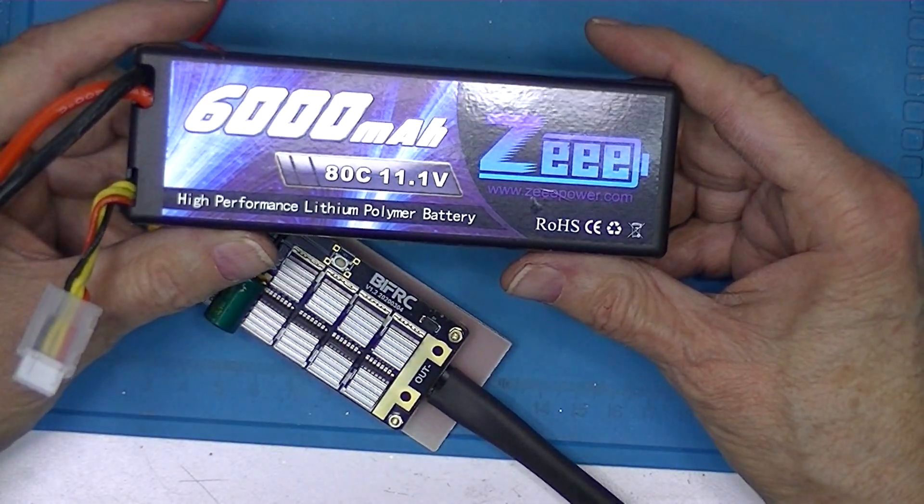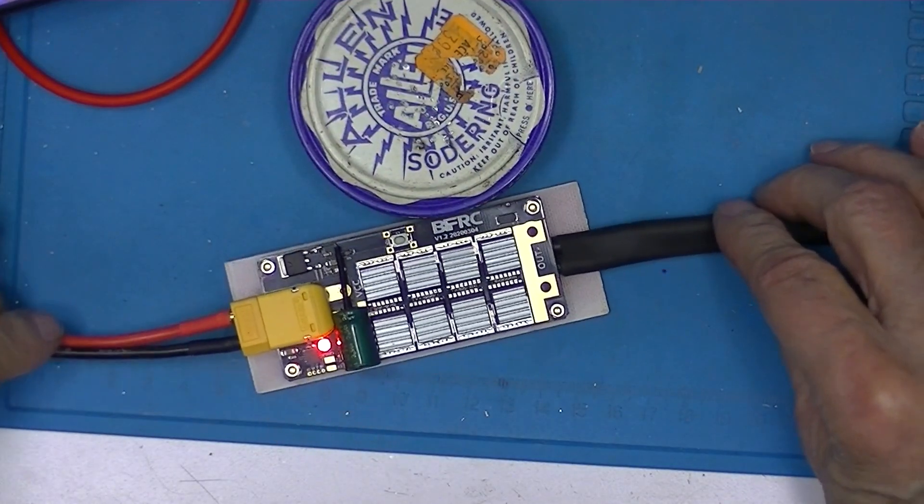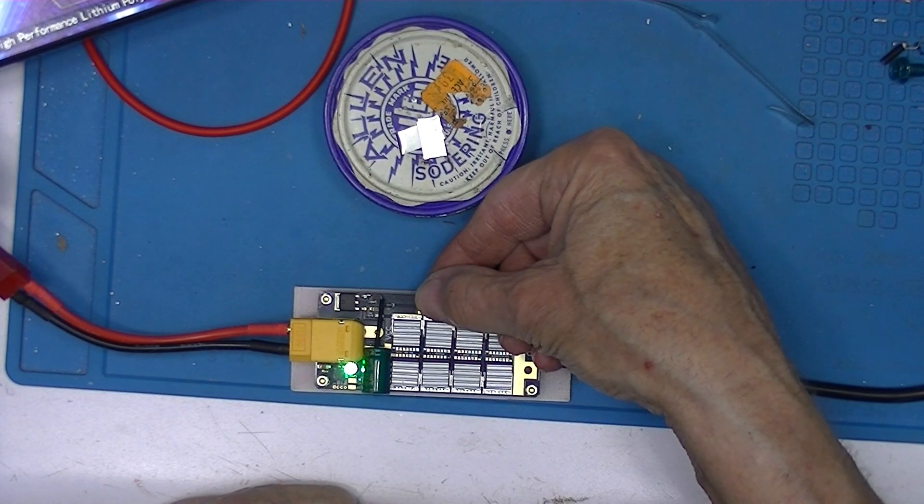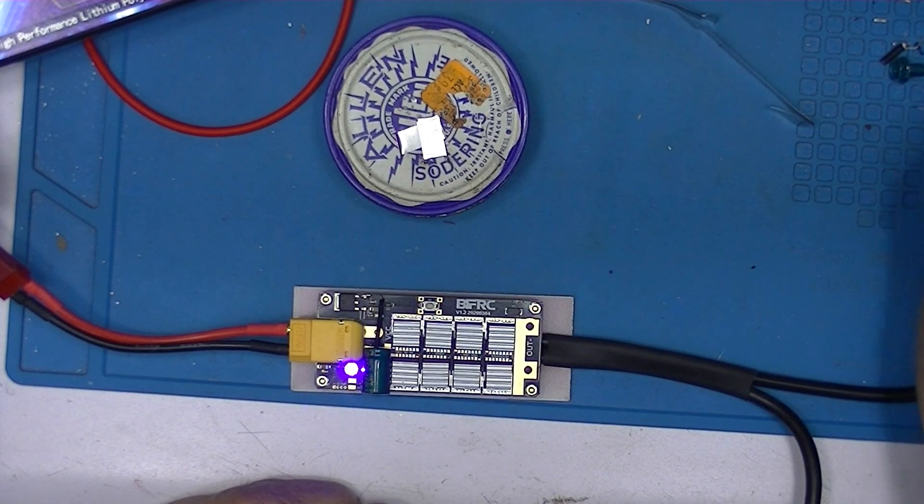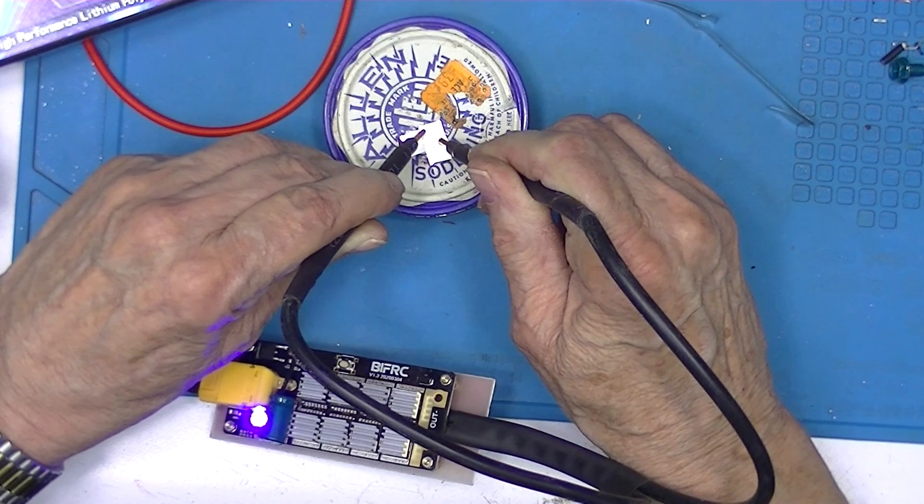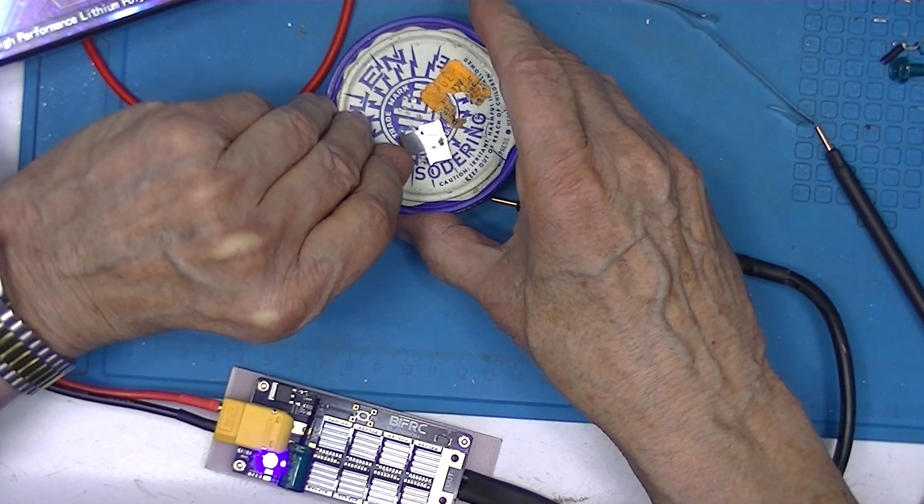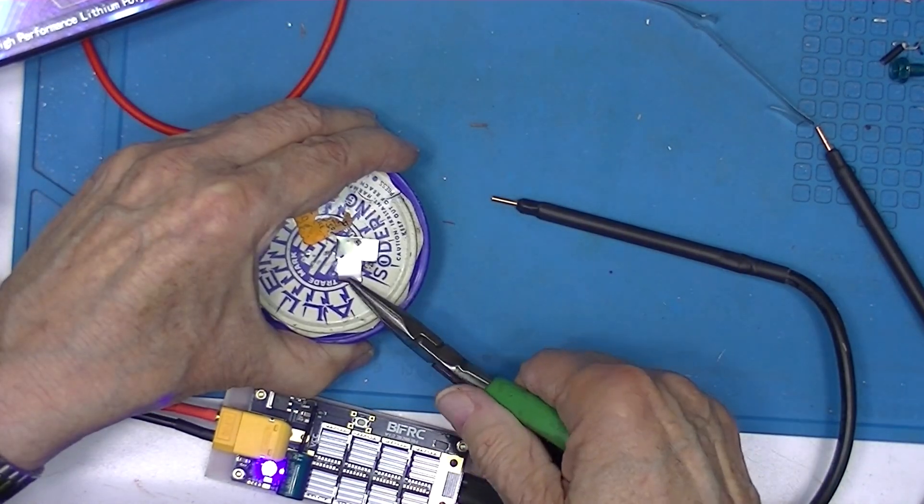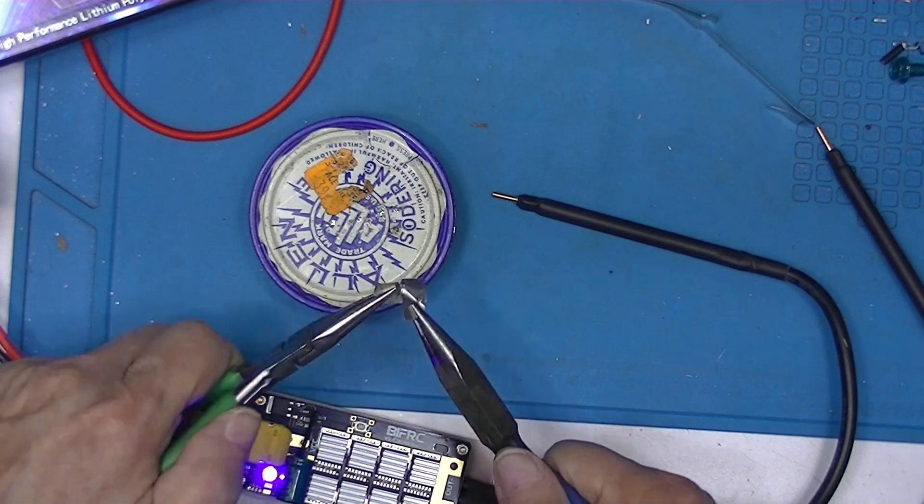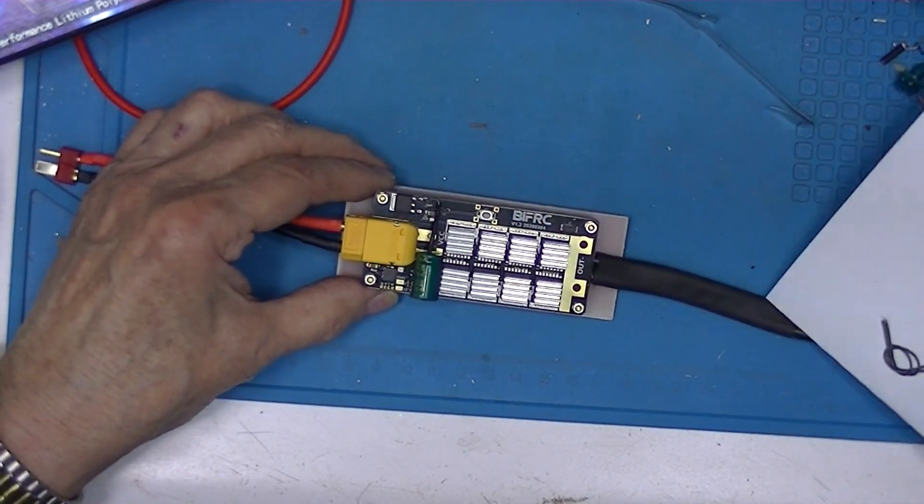I'm going to be using this 11.1 volt, I just took it off the charger. Here's our can. Here we are blue. Well I don't know what the spark was when I touched it the first time, it certainly welded. And that's on blue.